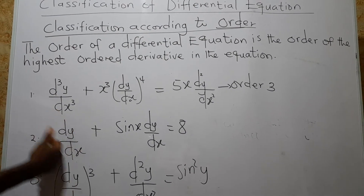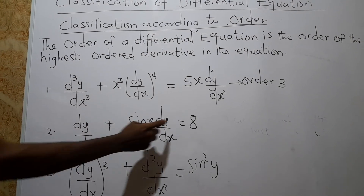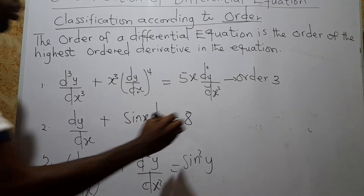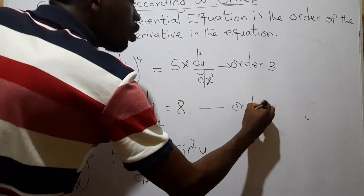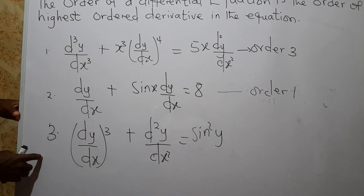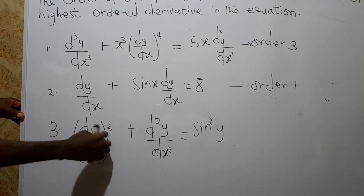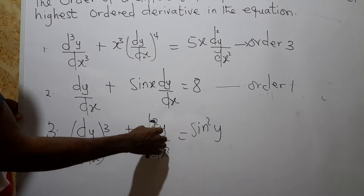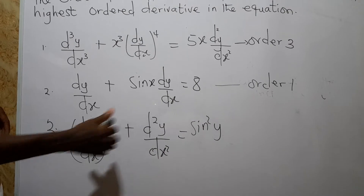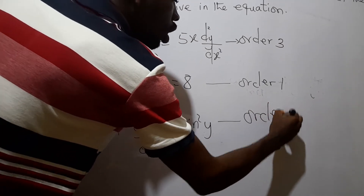Now let's look at the next equation. The order of this derivative is 1 and the order of the next term is also 1. The highest order is 1, so the order of this differential equation is 1. For the third one: this is differentiated 1 time so the order is 1, and this is differentiated 2 times so the order is 2. The highest order is 2, so this differential equation is of order 2.